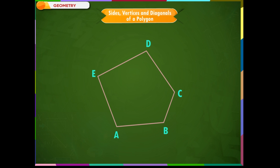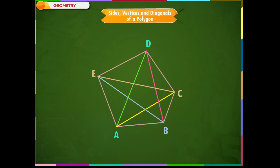The end points of the same side of a polygon are called the adjacent vertices. The pairs of adjacent vertices are A and B, B and C, C and D, D and E, and E and A. The line segments joining pairs of vertices which are not adjacent are called the diagonals of the polygon. The diagonals of this polygon are AC, AD, BD, BE, and CE.